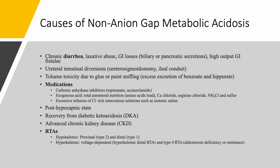Post-hypocapnic state, because of the renal compensation, will give you non-anion gap acidosis because the kidneys have not caught up with the pulmonary correction yet. Recovery from diabetic ketoacidosis — now the kidneys are working and you're excreting all these ketones with sodium and potassium — so the anion gap initially from these ketone bodies will be gone because everything is excreted in the urine and chloride will be left behind. Advanced chronic kidney disease, again stage 4 and 5, can give you non-anion gap metabolic acidosis, and like we said, RTAs.